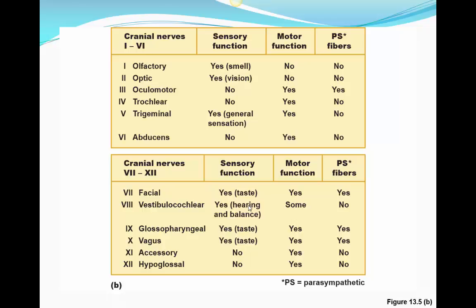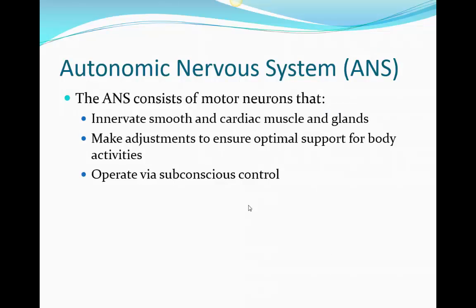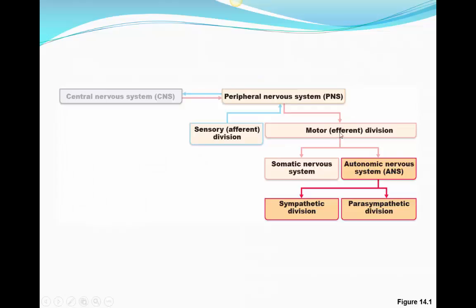Moving on to the autonomic nervous system — this controls smooth muscle, cardiac muscle, and glands. It's the involuntary part of the body that keeps us operating on a minute-to-minute basis, controlling blood pressure, smooth muscle contraction in the digestive and urinary tracts, and maintaining homeostasis along with the endocrine system. We have no direct control over the activities of the autonomic nervous system. If the motor response activates voluntary skeletal muscle, that's the somatic nervous system; the autonomic nervous system controls cardiac muscle, smooth muscle, and glands.